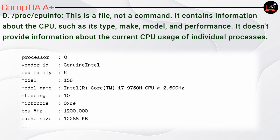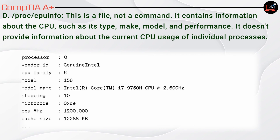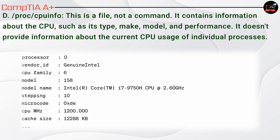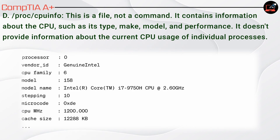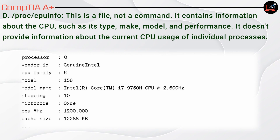D. /proc/cpuinfo. This is a file, not a command. It contains information about the CPU, such as its type, make, model, and performance. It doesn't provide information about the current CPU usage of individual processes.